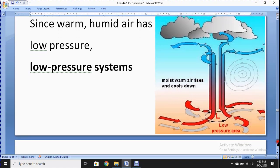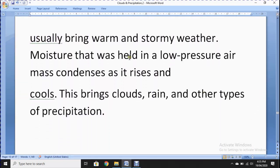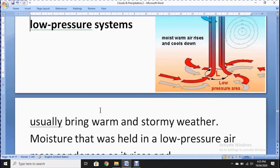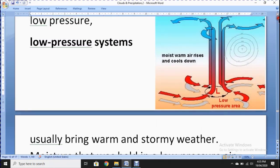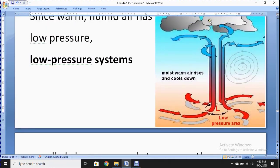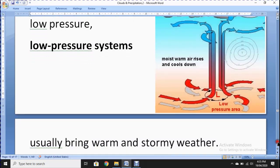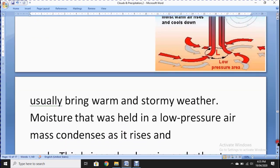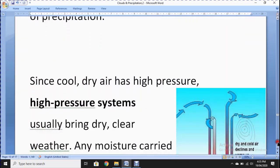Now see the definition of low pressure system. Usually bring warm and stormy weather. Moisture that was held in a low pressure air mass condenses as it rises and cools. This brings clouds, rain and other types of precipitation. When it goes upward what happens it will convert into rain in the form of precipitation or hail or ice. It converts into clouds, rain and other types.